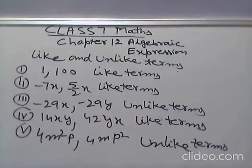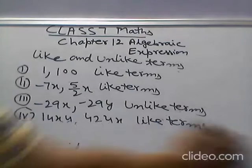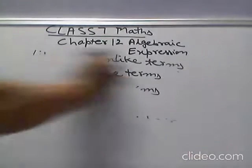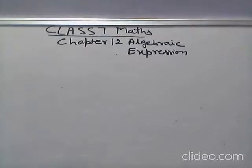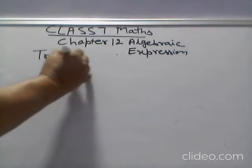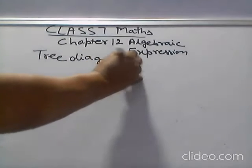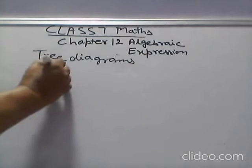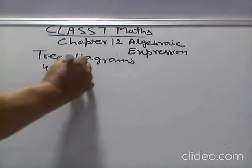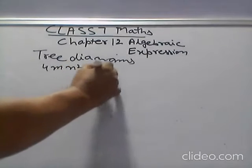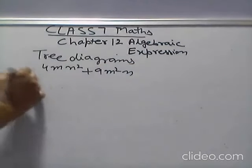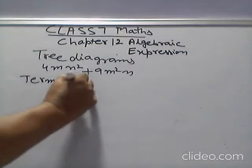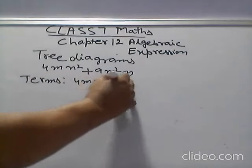Now, Show the terms and factors of the following expression by tree diagrams. Tree diagrams. Terms. 4mn square plus 9m square n. Terms. Factors. 4mn square, 9m square n. Factors.